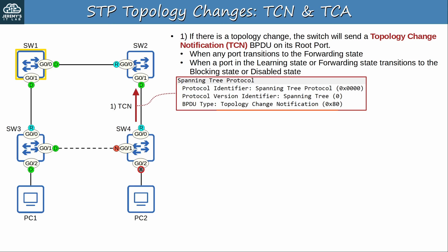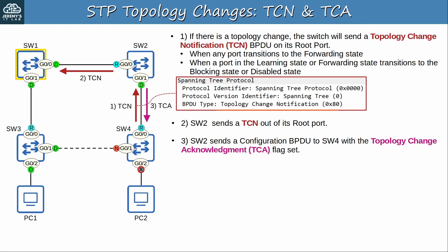Here are the contents of a TCN BPDU. There's not a lot of information — the point is just to tell the root bridge that there has been a topology change. After receiving switch 4's TCN, switch 2 will send a TCN out of its root port, and it will then acknowledge switch 4's TCN by sending a configuration BPDU with the topology change acknowledgement flag set. Note that switch 2 sends its TCN before acknowledging the one it received from switch 4. The goal is to notify the root bridge as soon as possible, so the TCN takes priority.